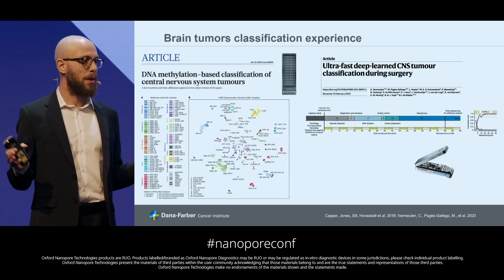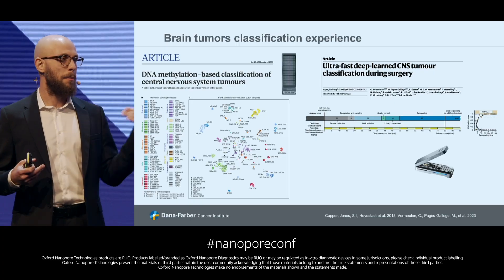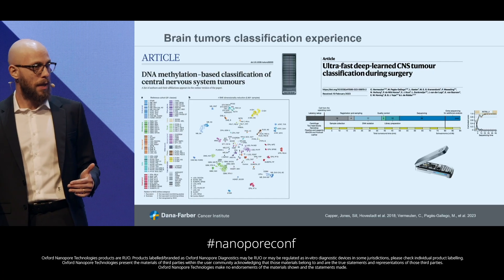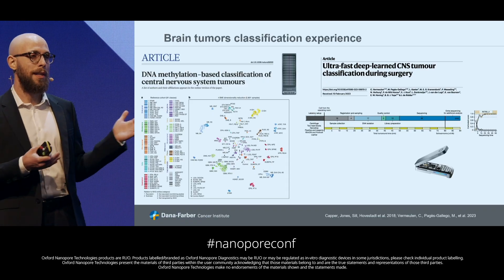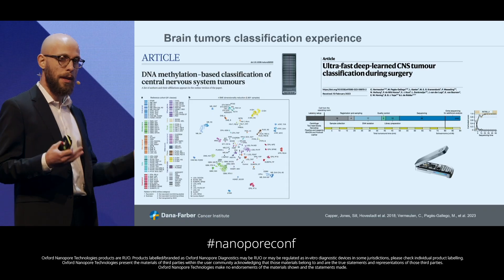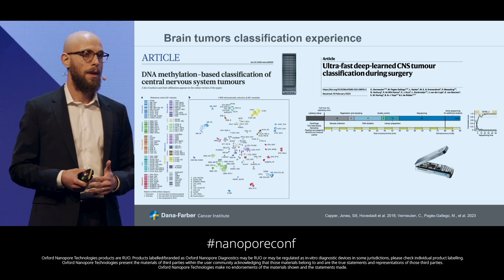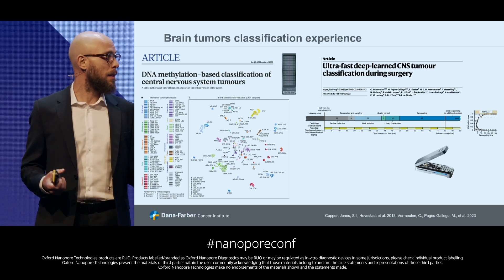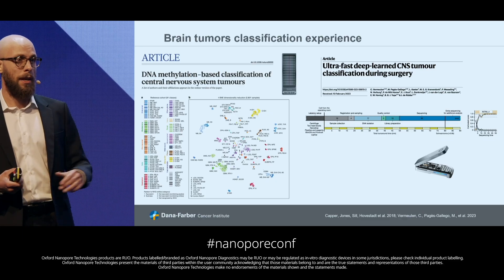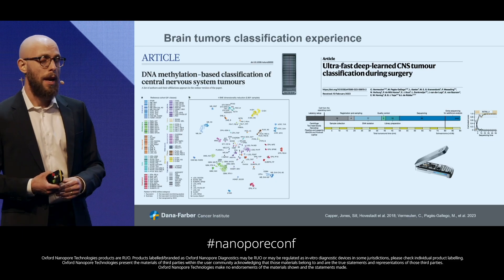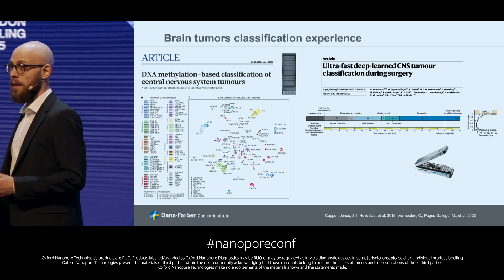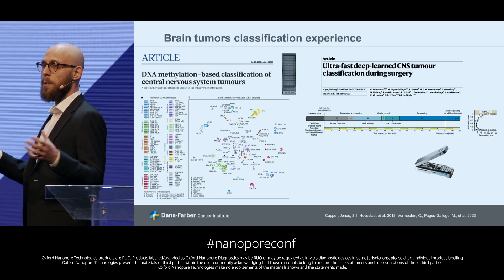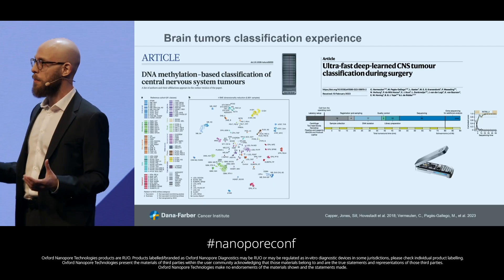They created this reference cohort and trained machine learning models. So now, when there is a new brain tumor sample, it can be profiled and, using this classifier, we can get an accurate classification. Over the years, this has been a huge success — hundreds of thousands of samples have been classified with this approach. And recently, we have seen that this can be done in a rapid way by doing a sparse profile of the methylome using nanopore sequencing data.